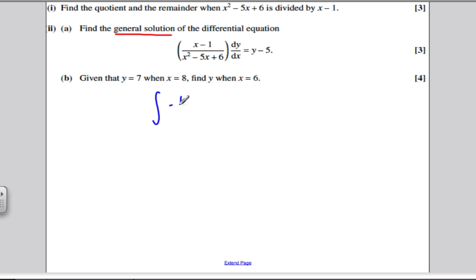You get the integral of 1 over 5 minus y dy would be equal to the integral of 1 divided by this, which flips the fraction, which makes it x squared minus 5x plus 6, all divided by x minus 1. And that would be with respect to x.